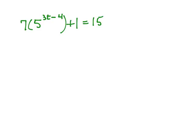In our next example, we're also going to take the log of both sides to simplify, but we're going to have to use a little bit more algebra. So 7 times 5 raised to the power 3t minus 4 plus 1 equals 15. We want to solve for t.